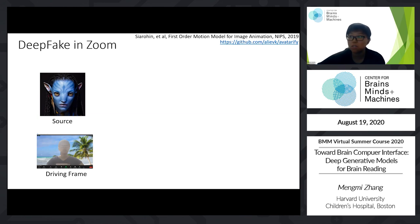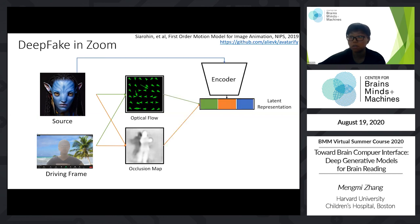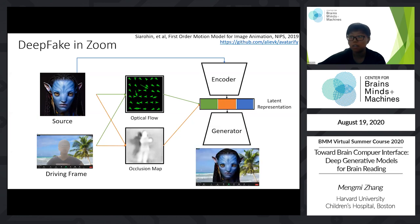Here's the source image, which is the avatar you want to be. And this is the driving frame, which is the real me. We can calculate the optical flow, which tracks the movement of individual pixels between adjacent frames. We can also calculate the occlusion map, which denotes the part of the background that needs to be painted. Together with the features extracted from the source image, these three components form a latent representation, which we pass to the generator. The generator then synthesizes new frames and broadcasts to Zoom.